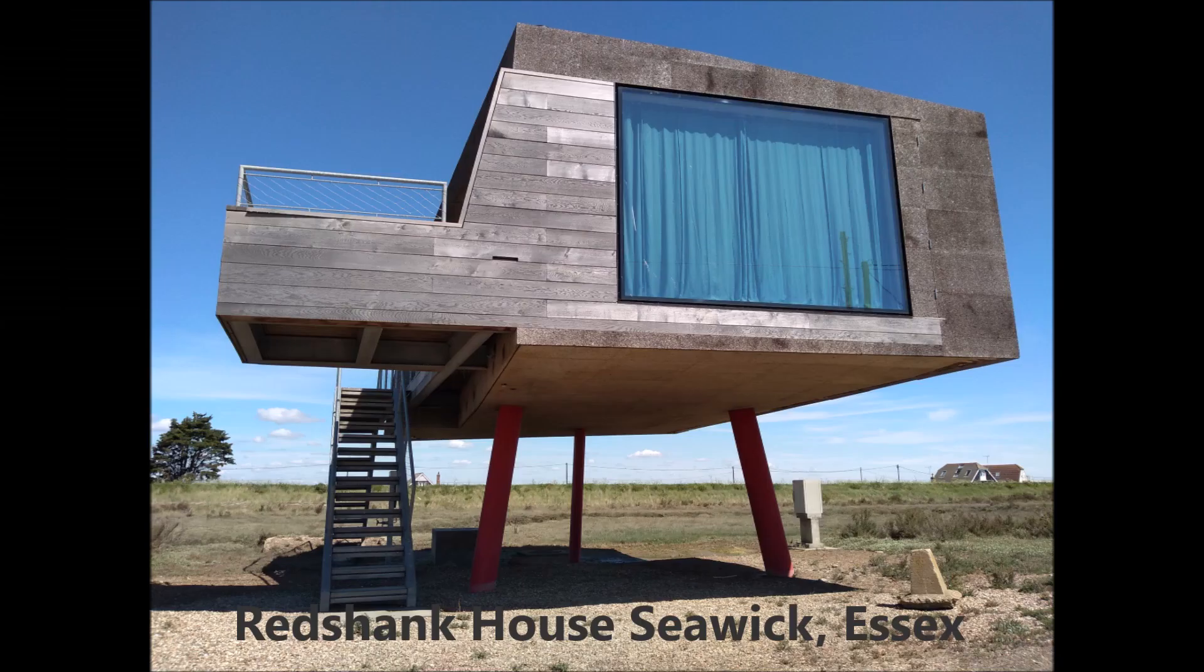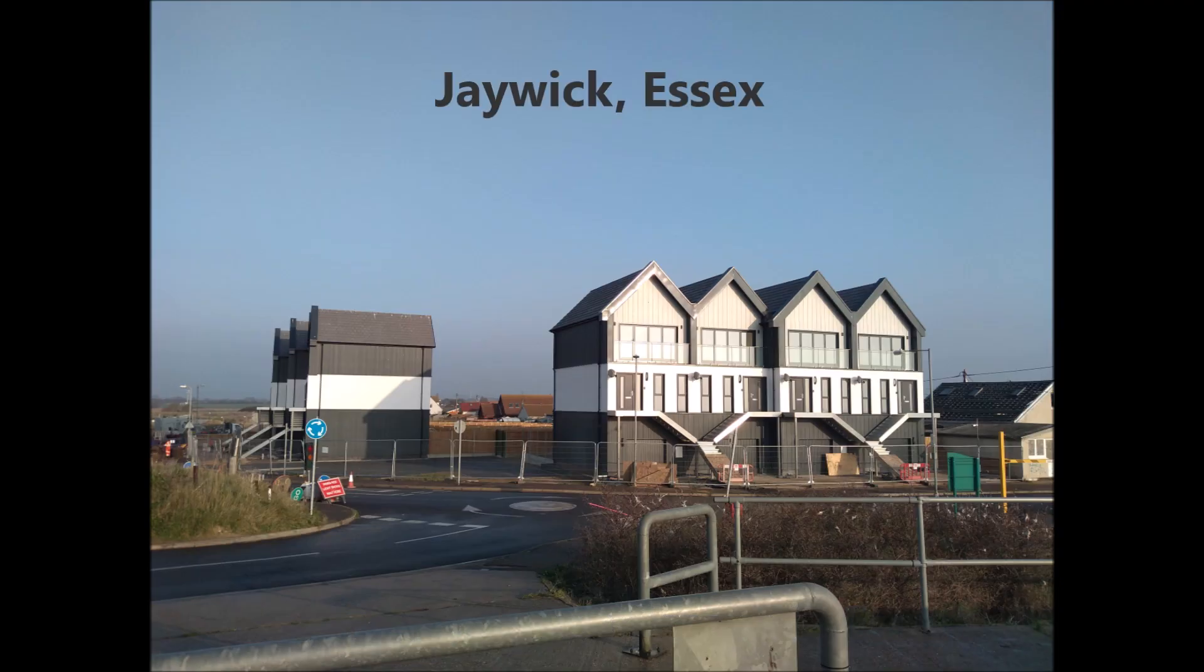We see real examples of this around our coast. Here's a house on stilts at Seawick in Essex. And just around the corner, here are some homes raised up out of the predicted flood level at Jaywick.